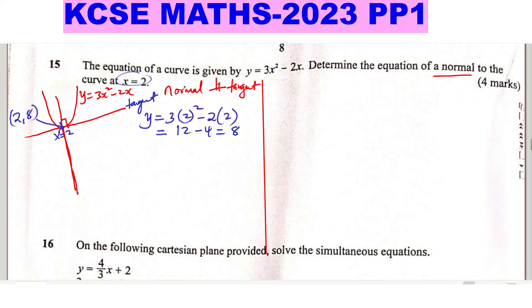The point where the tangent and the normal touch the curve is (2, 8). To get the equation of the normal, which is a straight line, we will need one point and the gradient. We shall start by getting the gradient of the tangent, which we'll call M1, and the gradient of the normal, which we'll call M2.